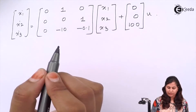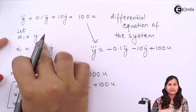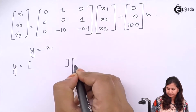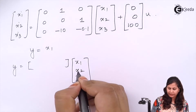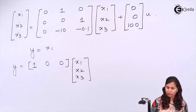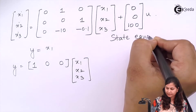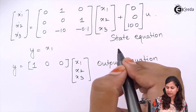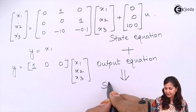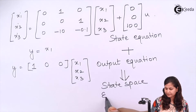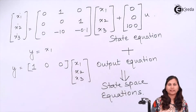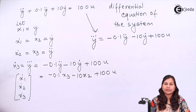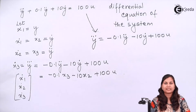We have obtained the state equation. Since our first state variable is x1 = y, the output equation becomes y = [1, 0, 0] · [x1, x2, x3]ᵀ. The state equation and the output equation together are known as the state space equations, or the state space representation, or the state model of the system. In this way we can find the state space representation of a system whose transfer function is given. I hope this problem is clear to you, thank you.